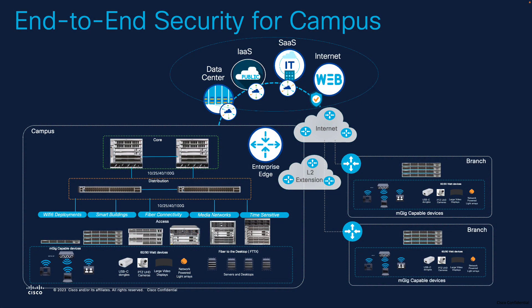Let's talk about what an enterprise campus architecture looks like today. An enterprise campus architecture is no longer siloed to a single campus environment. We see multiple campuses, multiple branch networks, and on top of that, applications hosted on cloud and data centers all over the network.